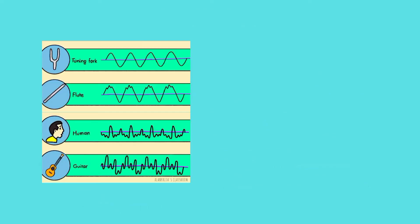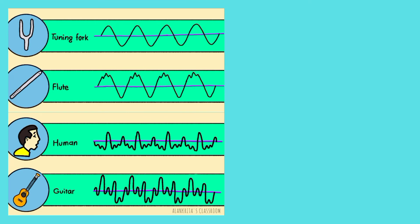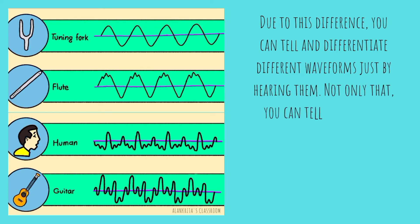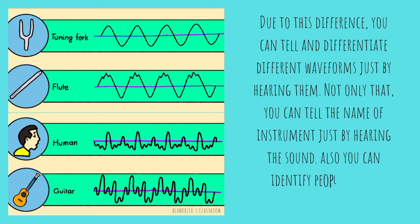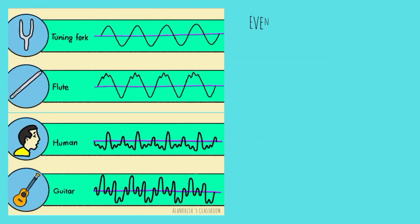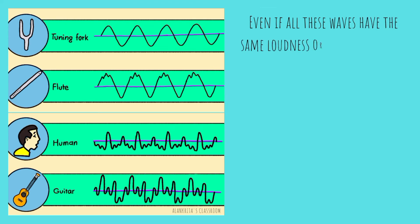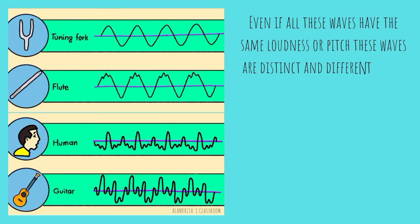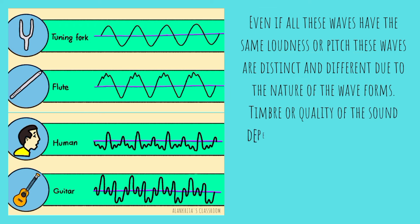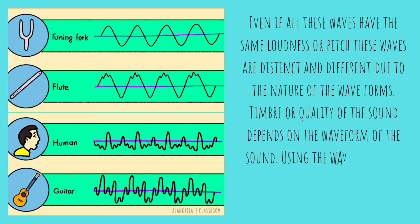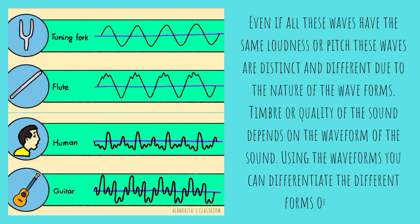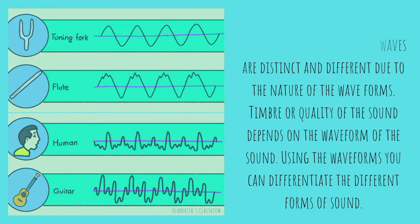Now, look at these pictures — these are different sound waves. Due to this difference, you can tell and differentiate different waveforms just by hearing them. Not only that, you can tell the name of an instrument just by hearing the sound, and you can identify people just by listening to their voices. Even if all these waves have the same loudness or pitch, they are distinct and different due to the nature of the waveform. This means that quality of sound depends on the waveform of the sound, and using these waveforms you can differentiate the different forms of sound.